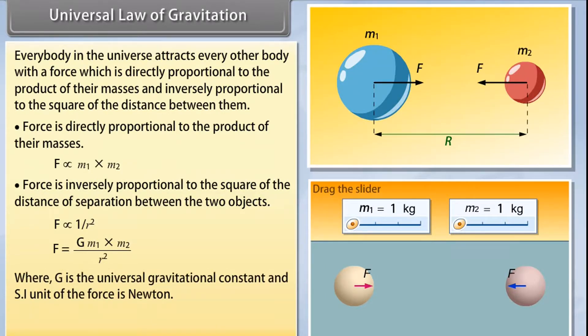Where G is the universal gravitational constant and its SI unit is Newton. Universal Law of Gravitation is also known as Newton's Law of Gravitation.